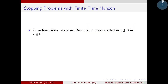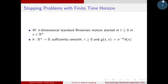Our setting is that the driving process is a standard Brownian motion in n-dimensions, denoted by W. The whole approach works the same way for Brownian motion with drift, but for simplicity we take a standard Brownian motion. We start it at some time t, where t is less than or equal to zero, and zero is our finite time horizon — so we stop the process at zero. We have a payoff function, and we look at a special case of discounted problems with a function h (usually C²) depending only on x, and some discount rate r ≥ 0.